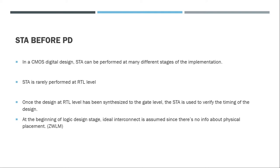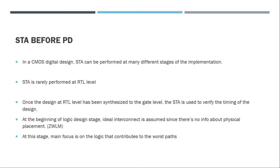Another technique at this stage is to estimate interconnect length using a wire load model. The wire load model provides estimated RC values based on the fanout of a cell — if a cell's output is connected to four cells, it calculates the RC load by considering how many cells are connected to its output. However, this estimation is highly pessimistic and not very accurate. Even so, at this stage the main focus of timing analysis is on logic contributing to the worst paths, so the designer can change the logic to improve timing before moving to physical design.